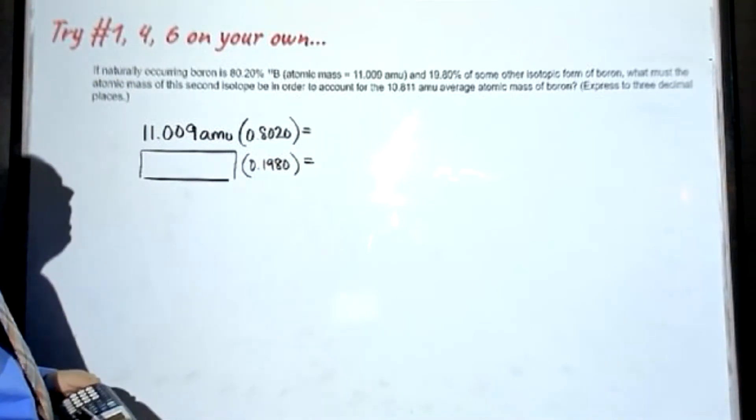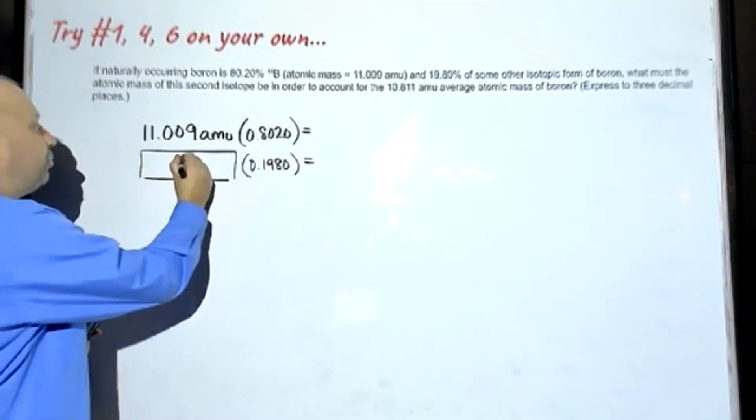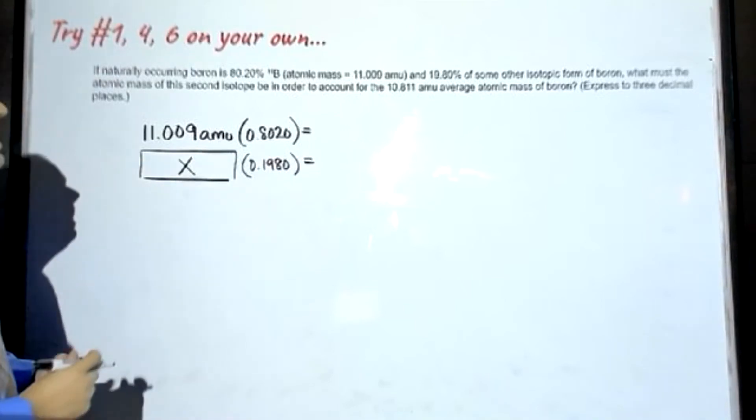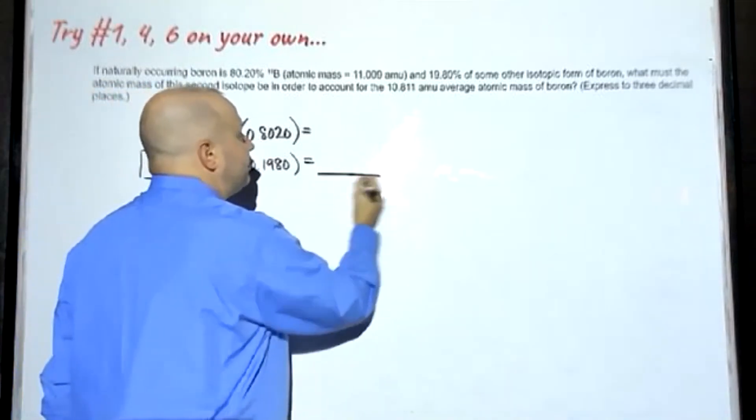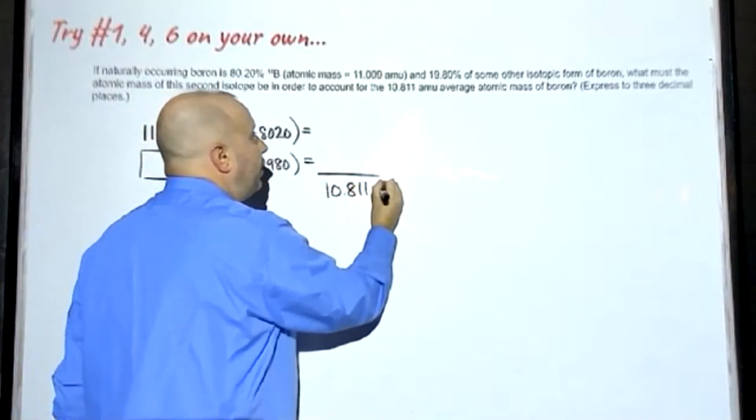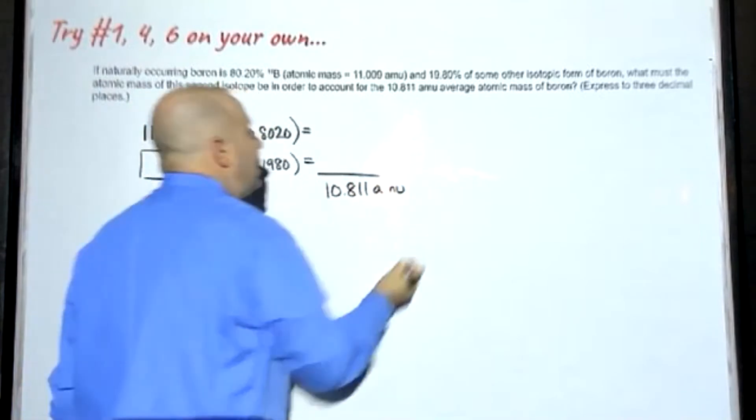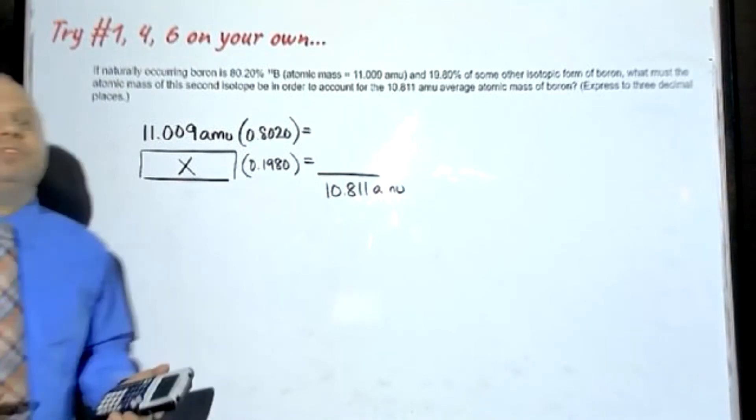So they don't tell you what this other number is here, but they do tell you the percent, 19.80. So we'll divide that by 100. Finally, what must be the atomic mass of the second isotope? So this is our unknown. We can put an X here.